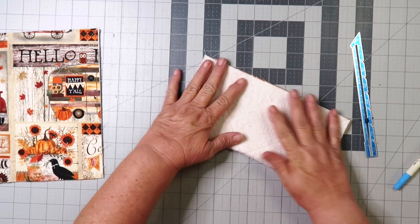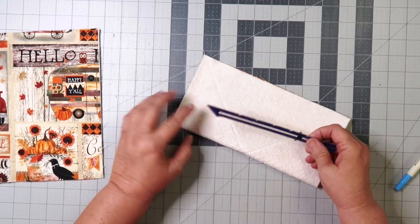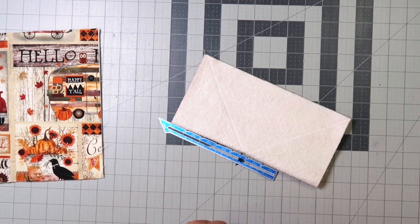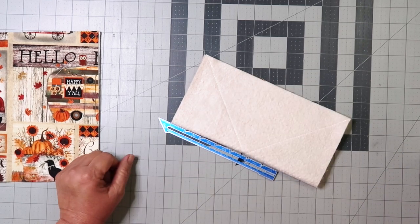And now we're going to prepare for the darts. Fold fabric in half, measure down 2 inches, and then from the top, 1 inch. Draw your line and repeat.